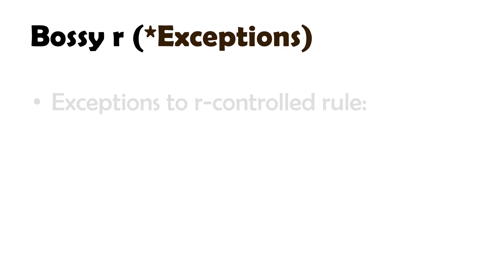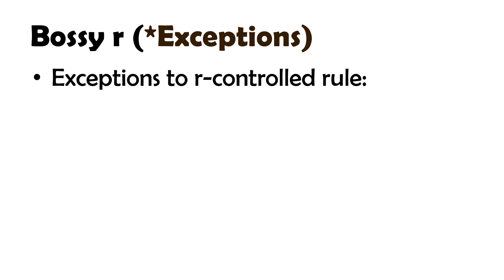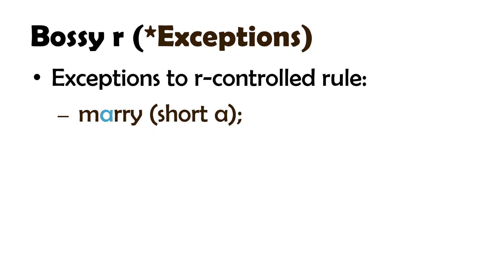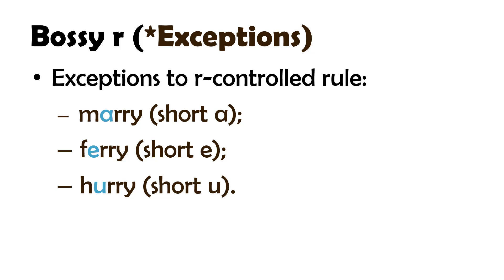Bossy R exceptions. There are a few exceptions to the R-controlled rule. When a vowel is followed by two R's, they are not R-controlled. For example, in the word 'Mary,' the vowel A makes the short A sound. In 'ferry,' the vowel E makes the short E sound. In 'hurry,' the vowel U makes the short U sound.